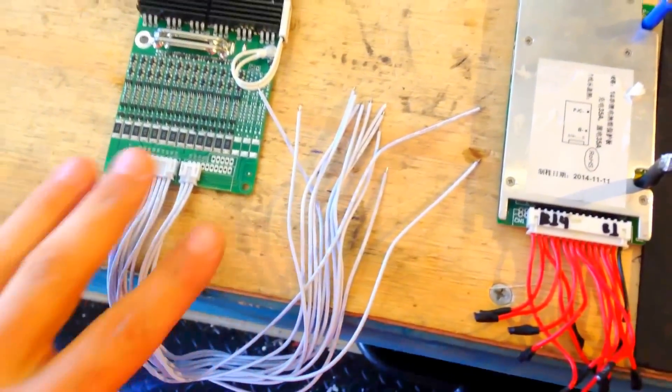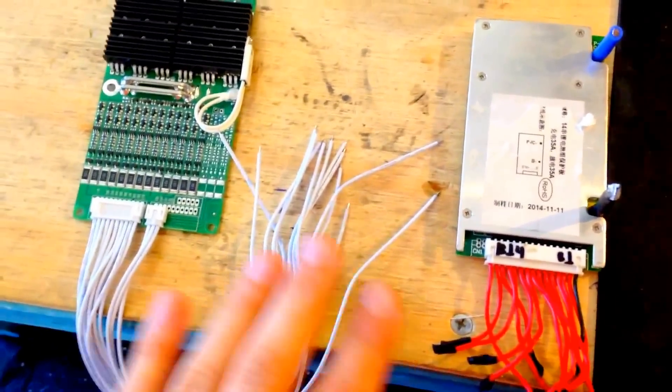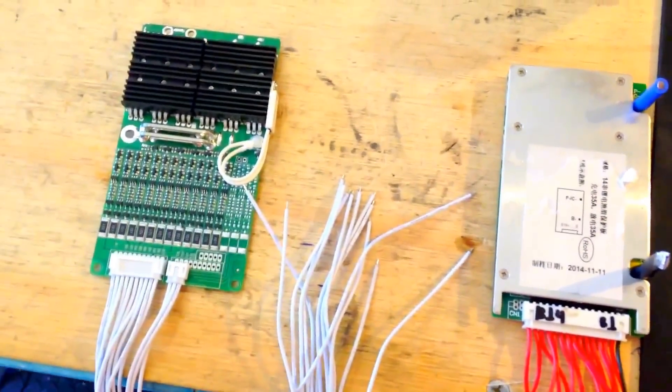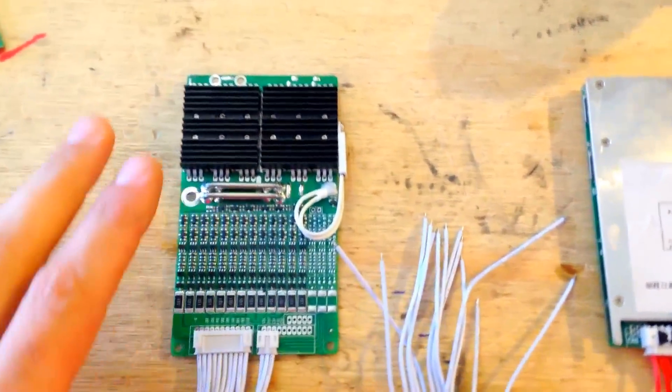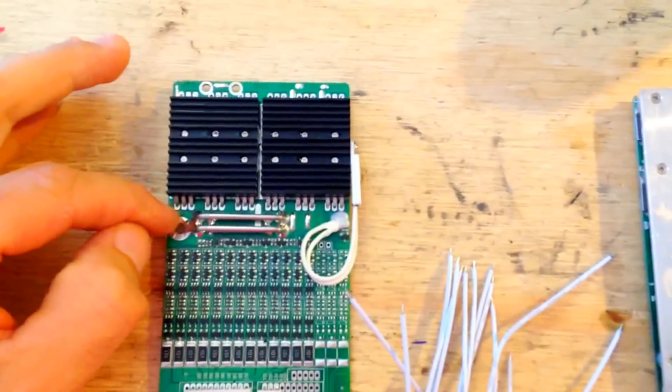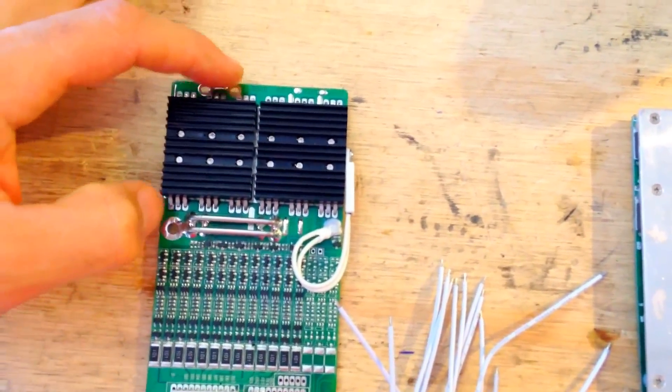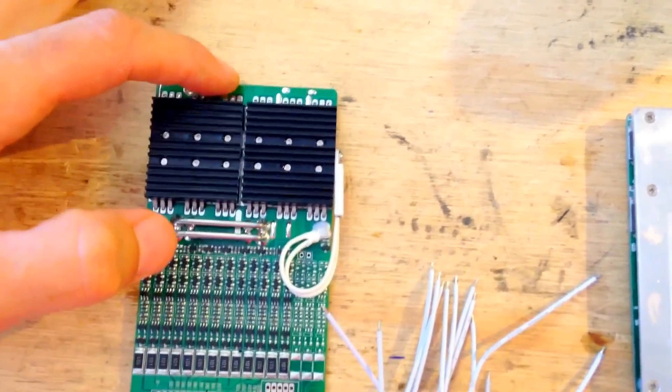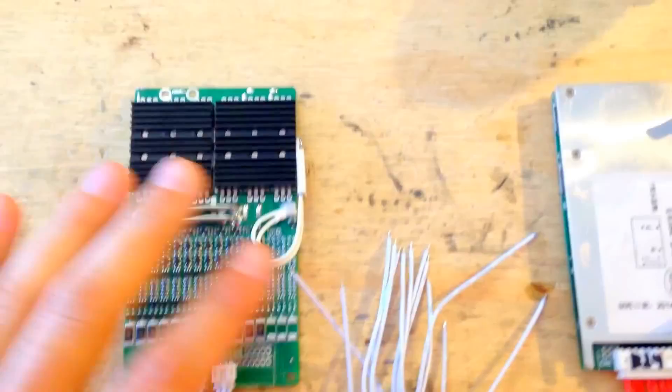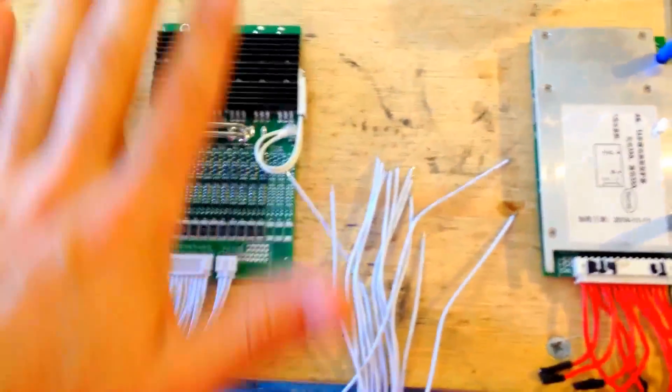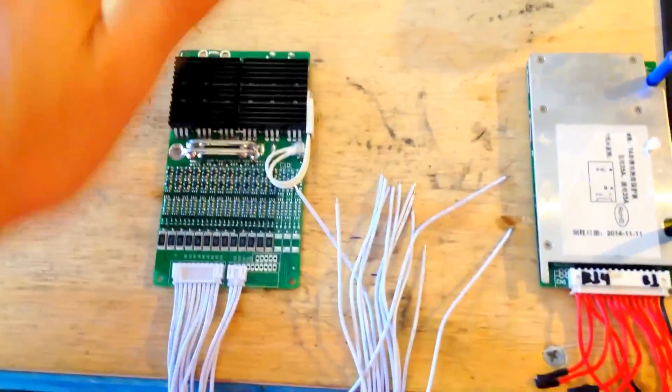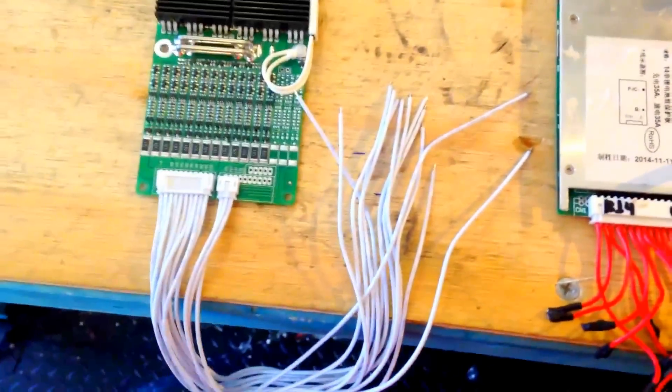When you're connecting all these balancing leads to your battery pack, first thing: disconnect from your BMS. And then you first sort out the battery minus charge discharge port, whatever you have there in your BMS, with the battery disconnected from the motor controller. You don't want to be under load at this time.